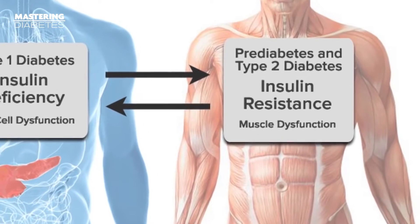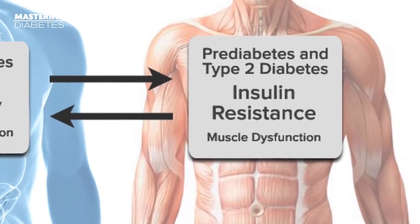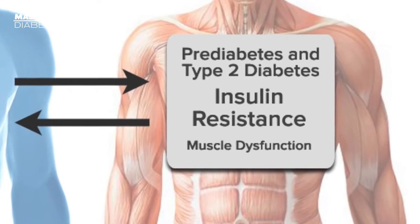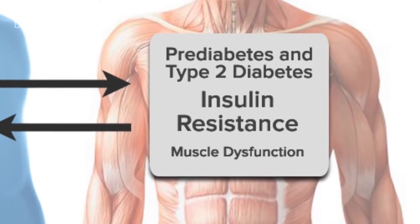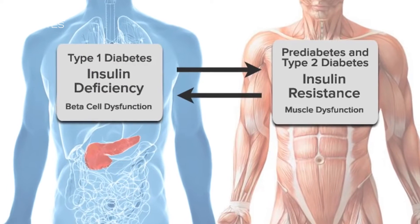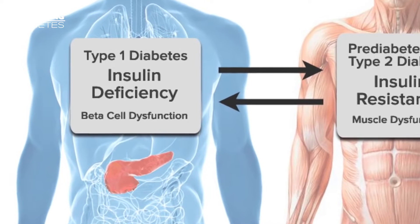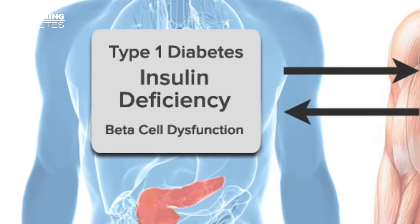One is typically thought of as insulin resistance, which is in the tissues — muscle, liver, fat. The other is called insulin deficiency, which is the beta cell, the pancreas. And what this figure shows is that the two are constantly interplaying.